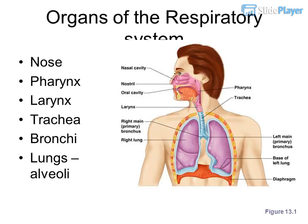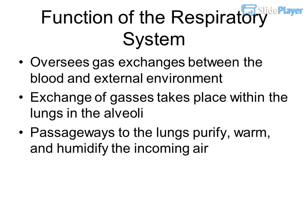The respiratory system. Organs of the respiratory system include the nose, pharynx, larynx, trachea, bronchi, lungs, and alveoli. The function of the respiratory system is to oversee gas exchanges between the blood and external environment. Exchange of gases takes place within the lungs in the alveoli.